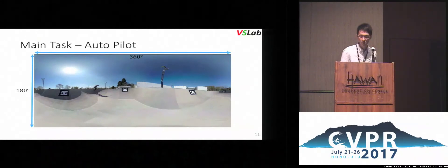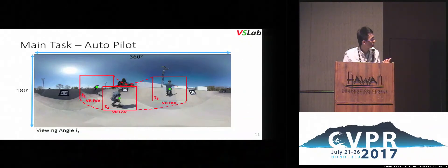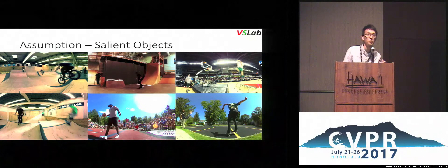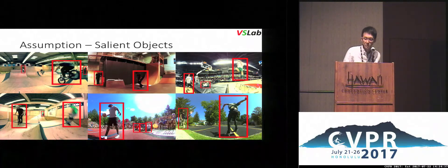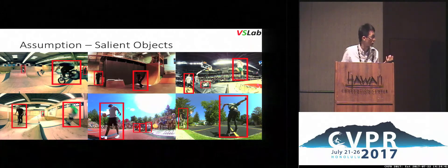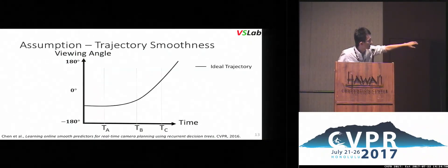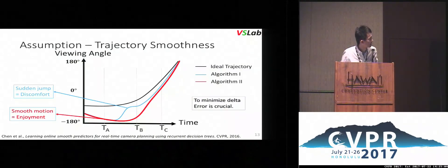This is how we define our main task. At each frame, the agent observes the panoramic image and steers the viewing angle — shown here as the green dot — so that the normal field of view covers the next salient objects. We aggregate all these viewing angles into a viewing angle trajectory, like the green dashed line here. We incorporate two assumptions: users will usually focus on foreground salient objects, and we want our viewing angle trajectory to be smooth, as trajectory smoothness is a crucial key in viewing experience.